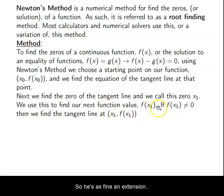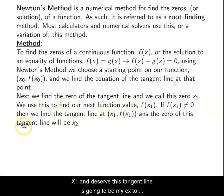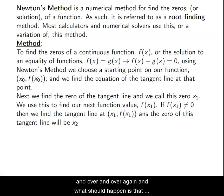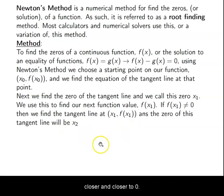We use this to find our next function value. As long as the derivative is not zero, we find the tangent line at x1, and the zero of that tangent line is going to be x2. We're just doing the same process over and over again. What should happen is that our approximations — x0, x1, x2, x3, x4 — should get closer and closer and closer to zero.